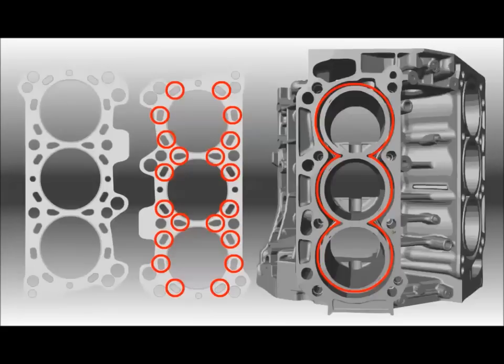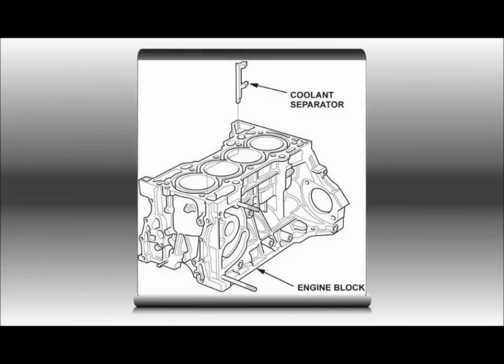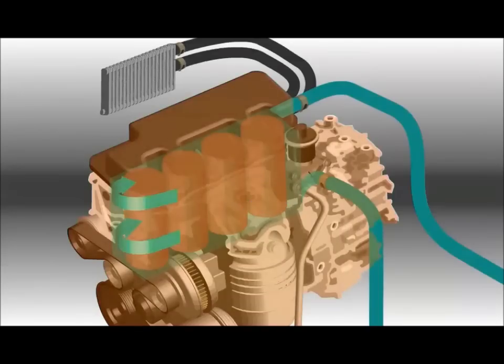The head gasket includes passages for coolant to flow from the water jacket into the head passages. The water jacket may also include a cooling separator to direct coolant in a specific direction. If you fail to install the cooling separator during engine work, coolant bypasses the water jacket, reducing cooling efficiency.